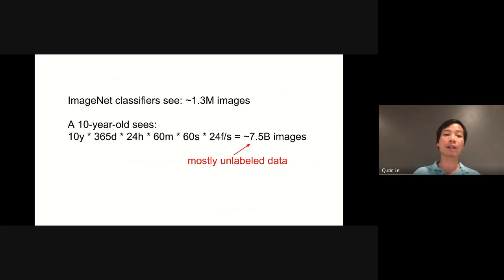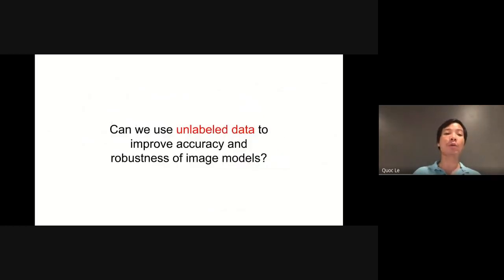Our intuition for the lack of robustness in state-of-the-art classifiers is that they don't see enough images. For instance, ImageNet classifiers only see about 1.3 million images, whereas a 10-year-old person can already see 7.5 billion images, most of them unlabeled. With this observation, our intuition is that in order to improve the quality and robustness of our classifiers, we need to make use of more images, especially unlabeled images.